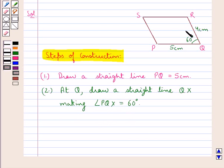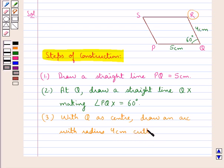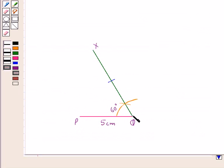Now in the next step we would locate the point R where this QR is of measure 4 cm. So with Q as center draw an arc with radius equal to 4 cm such that this arc cuts the straight line QX at the point R. Thus we have this QR as 4 cm.